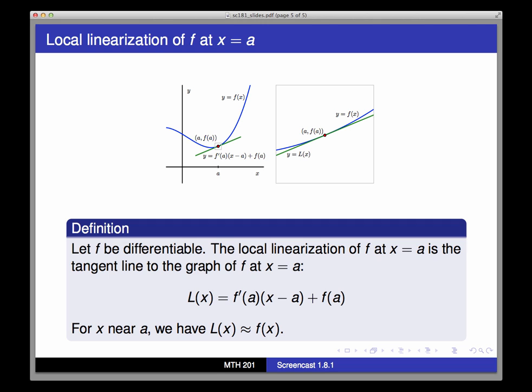Since f looks like its tangent line near x equals a, the approximate values of f that are near x equals a should be close to the actual values of f, as long as we don't move too far away from the point where we're linearizing.